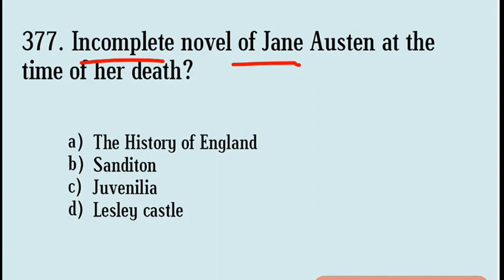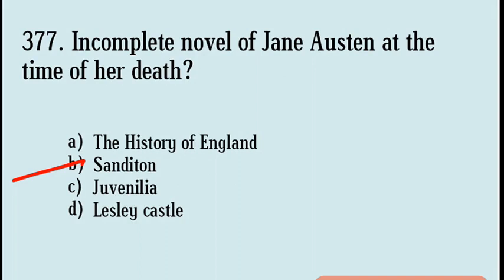Next question: Incomplete novel of Jane Austen at the time of her death. Options are The History of England, Sanditon, Juvenilia, Leslie Castle. Correct answer: Option B, Sanditon. Sanditon was incomplete when she died and was completed by D.J. Aden.